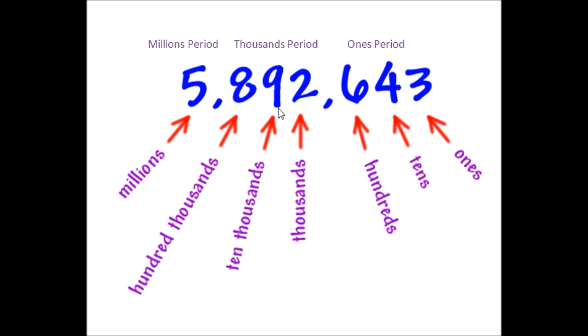The periods are separated by commas. In this middle period here, I have 892, so I read it as 892,000. In this last period, I have 643, and we simply read it as 643.